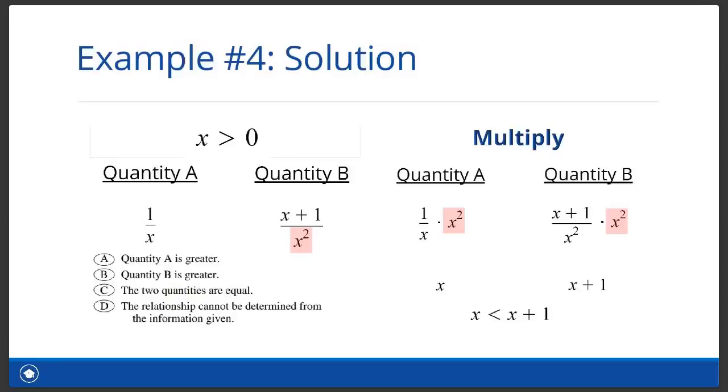So you just learned how to simplify with the multiply method. Just multiply both quantities by something that gets rid of the denominators of the fractions. So instead of comparing four terms, we're comparing two terms. Simplify questions and you'll improve your GRE math score.